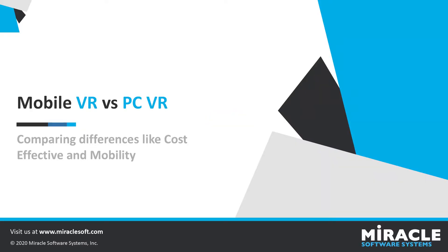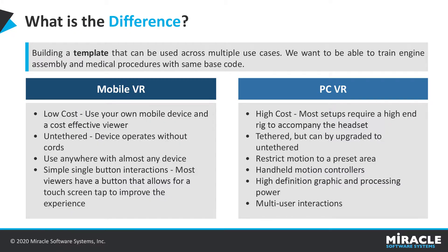So what's the difference between mobile and PC VR? Mobile VR, or the Google Cardboard, is low cost. It offers an untethered experience, which means there's no additional cords or cables required, and no additional equipment required. It does not require a PC to be hooked to the device, as the mobile device will do all the processing. It offers simple, single button interactions. Most viewers do have a button that allows for this, though there are some that do not.